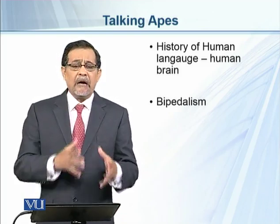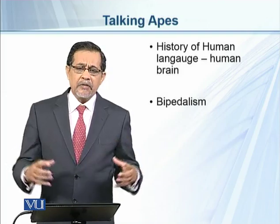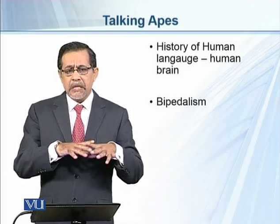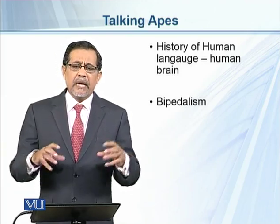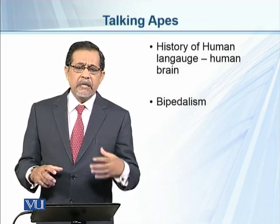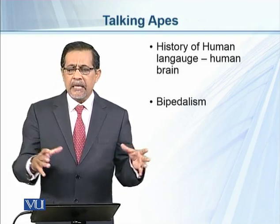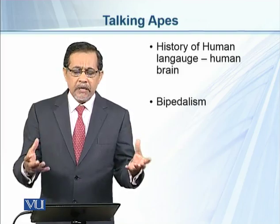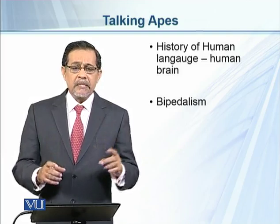When the apes started struggling for food, they spread over a large area of land and started using different types of food items. They started using their upper limbs to get food, and as a result they started walking on two legs.